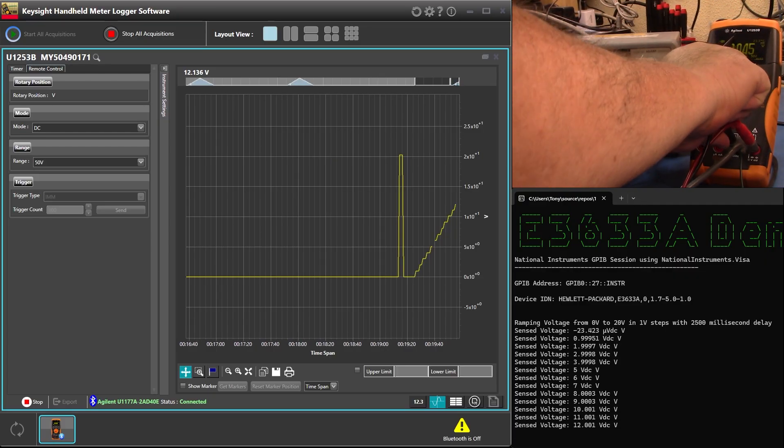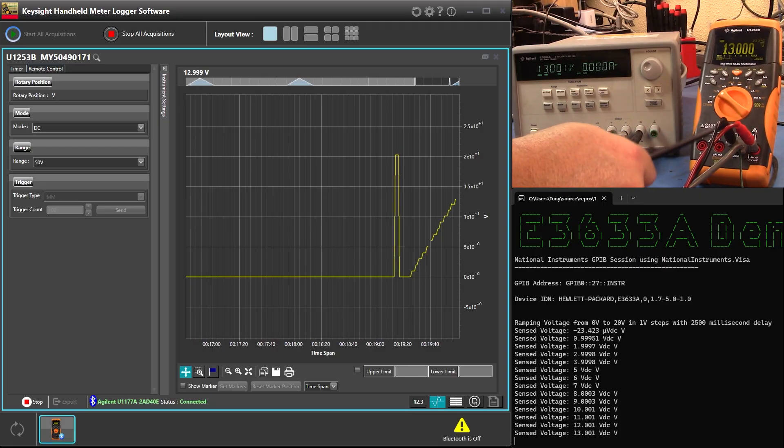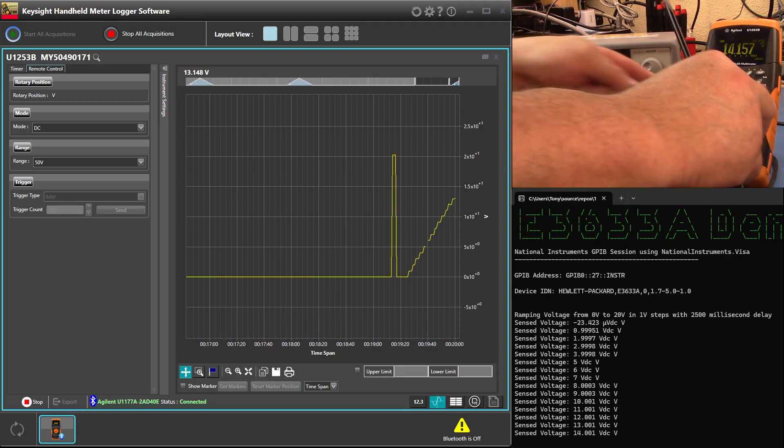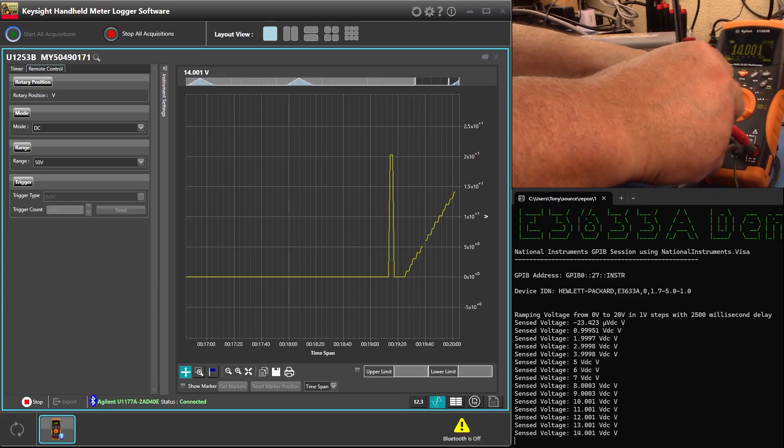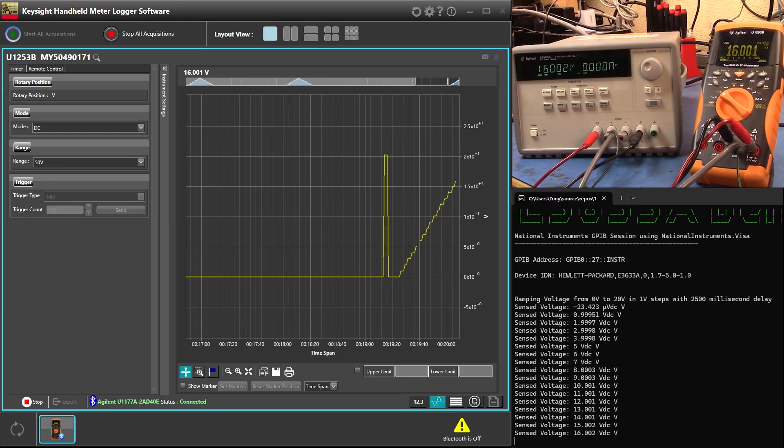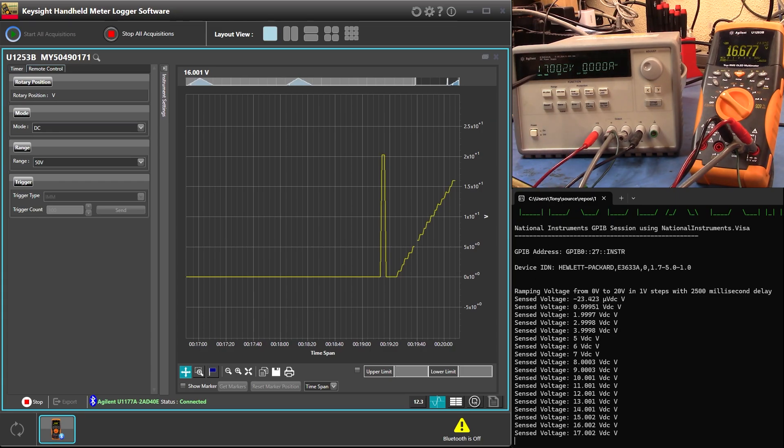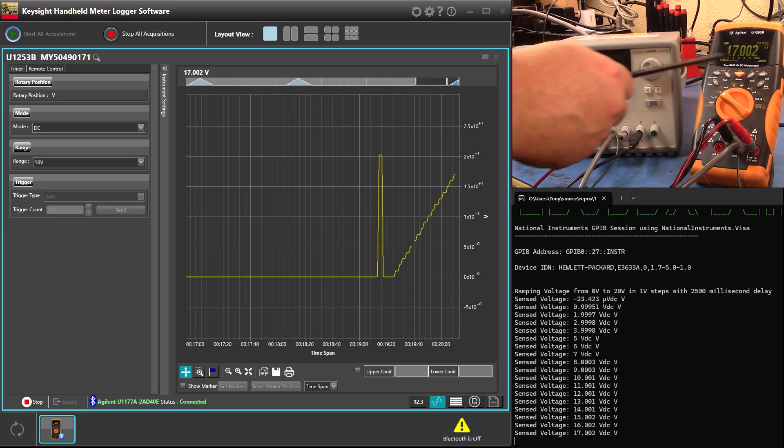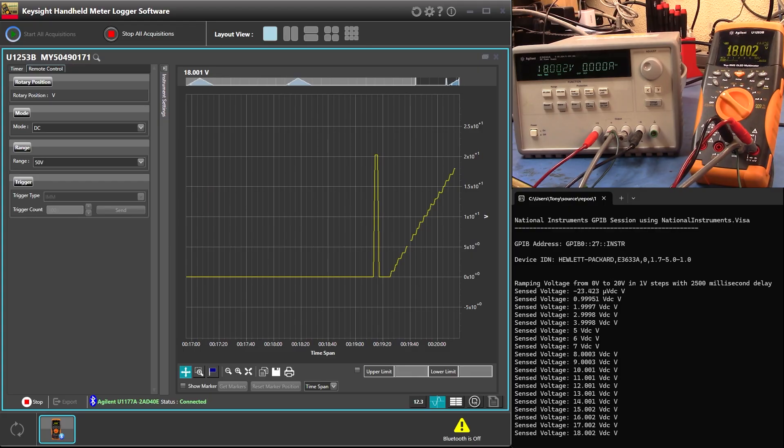Ah, here's the problem. There we go. I had the, when I moved around the little, my little lead is popping out. Okay, there we go. That's better. So now the sensor's connected and you can see that we're very accurate in terms of what's coming up.